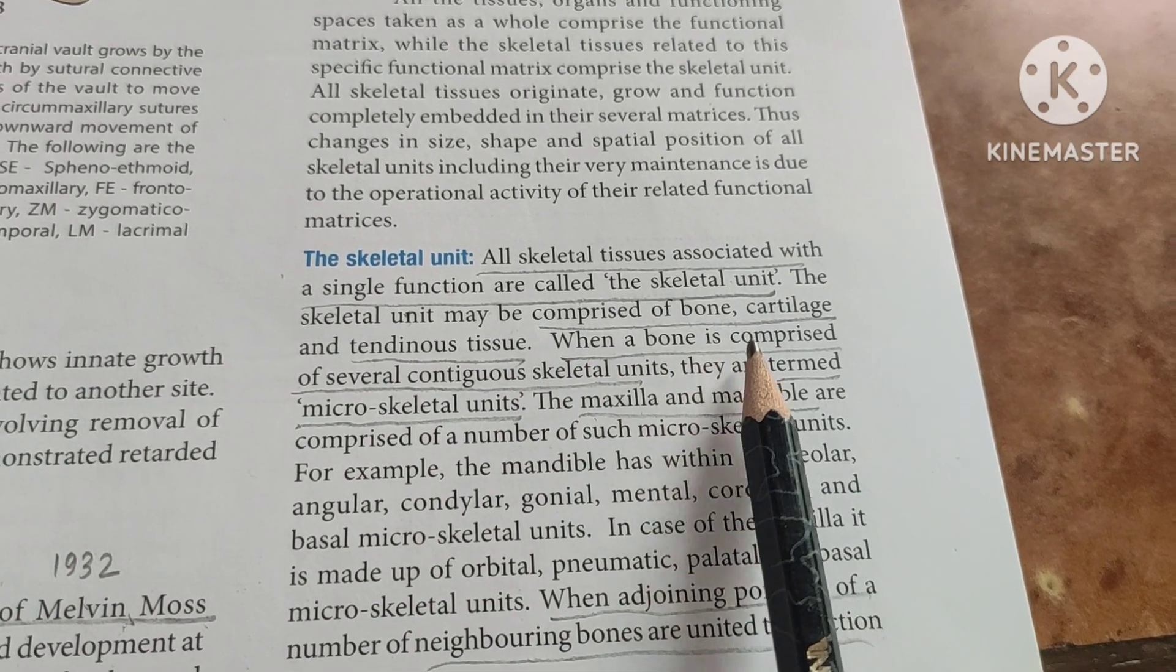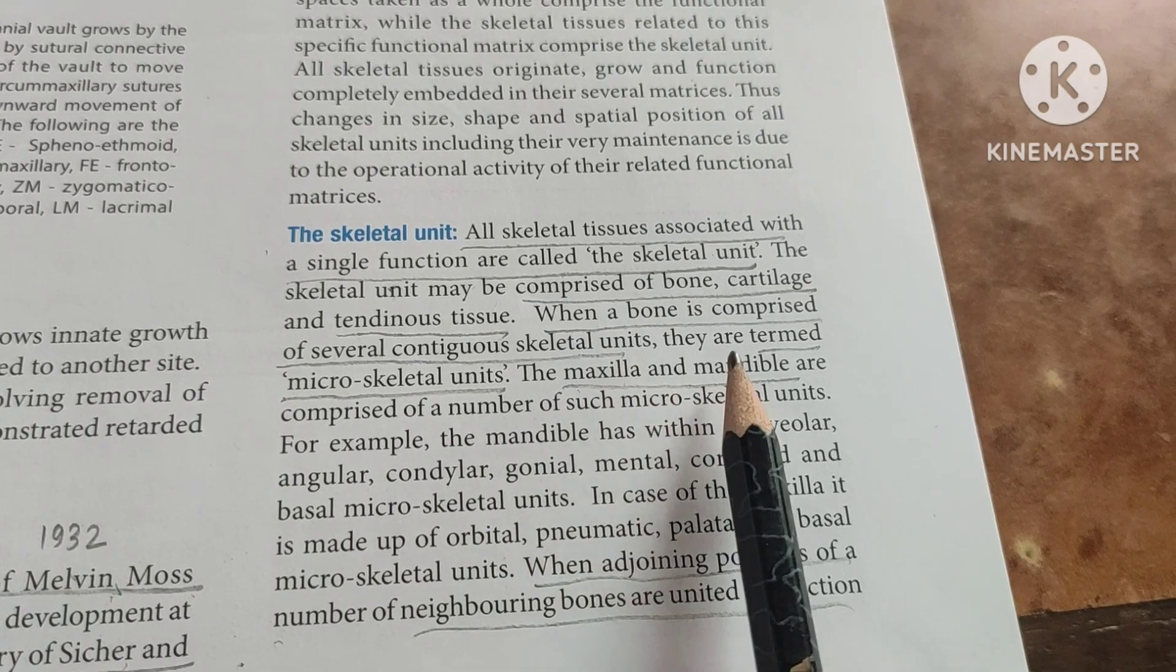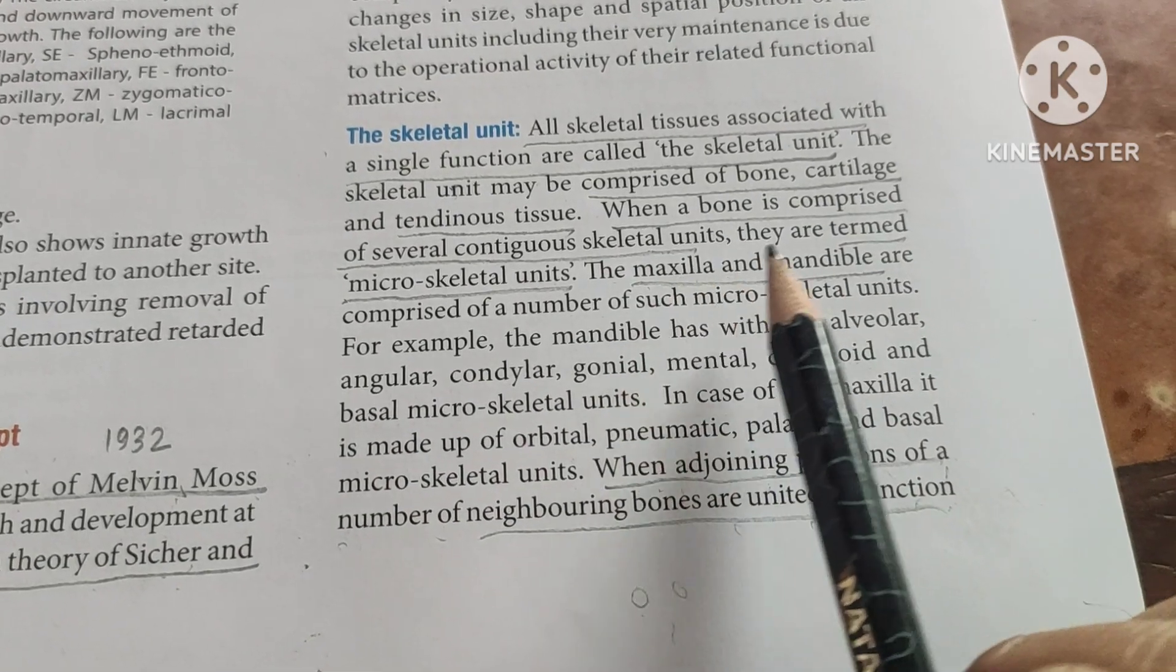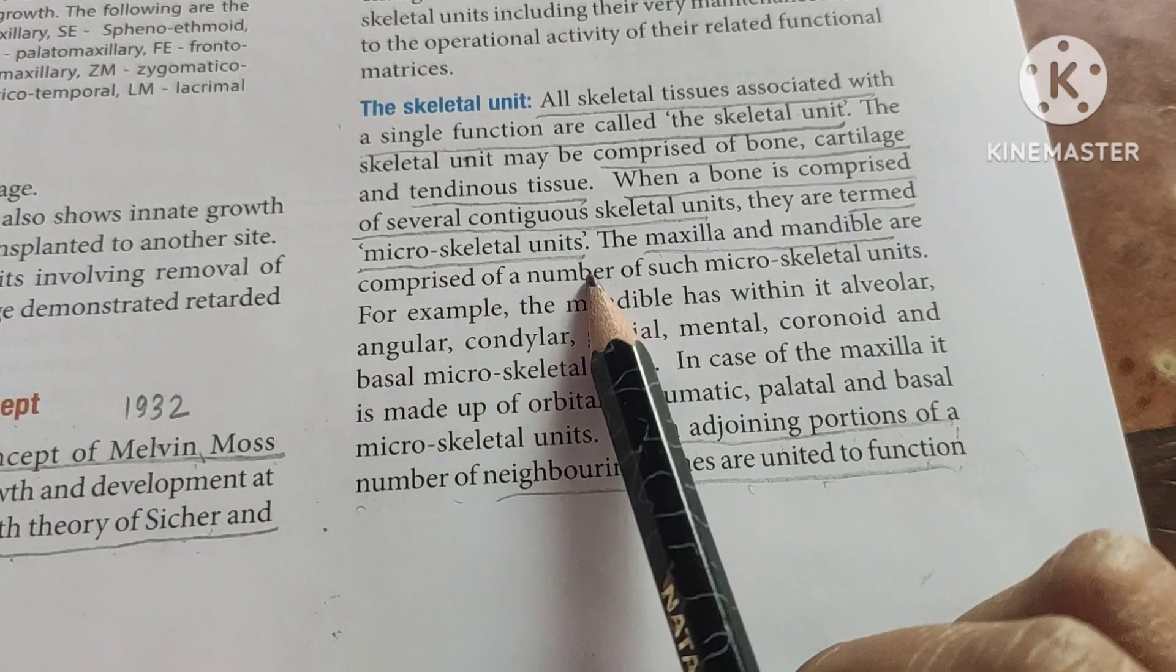When a bone is comprised of several contiguous skeletal units, they are termed the microskeletal unit. The maxilla and the mandible are examples of the microskeletal unit.